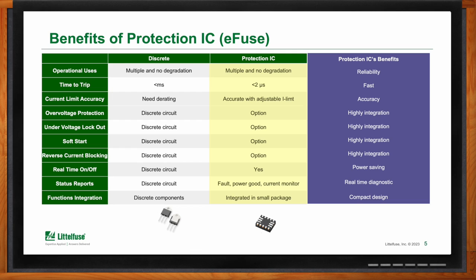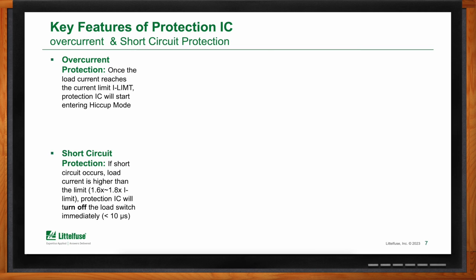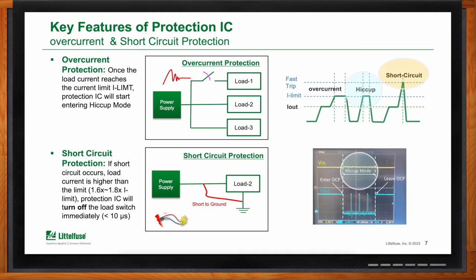Overcurrent protection is one of the key features of protection ICs, and it can also be used for short circuit protection. When there is a fault in the system that goes above the set threshold, the IC will try to limit that current for a very short period of time — tens of microseconds. If you still exceed that current in that very short period of time, it will shut the circuit down and then go into a hiccup mode, coming back on every eight milliseconds or so to check if the fault is still there, repeating until the fault disappears.